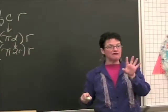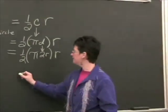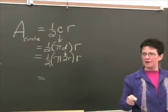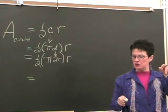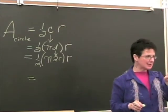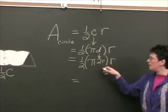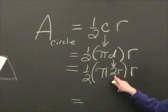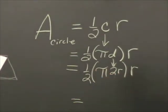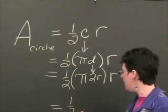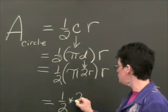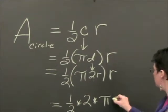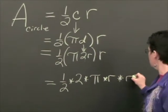Now, all we have to do is clean this up algebraically. In mathematics, are you allowed to multiply things in any order? Yes. Is one times two the same thing as two times one? Yes. So I am allowed to rearrange this. That's called the commutative property for multiplication. So I am going to bring this two and put it over here beside the one half. One half times two times pi times R times the other R.